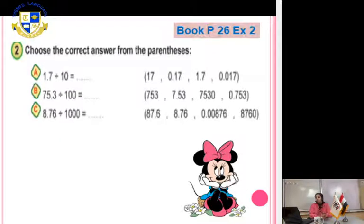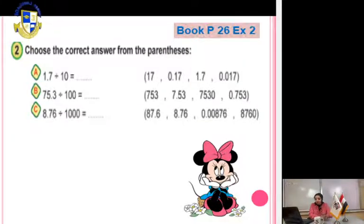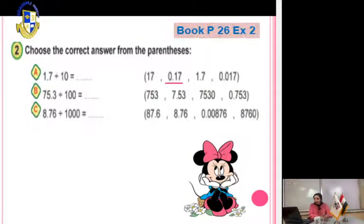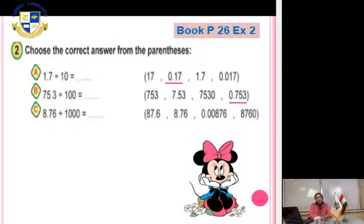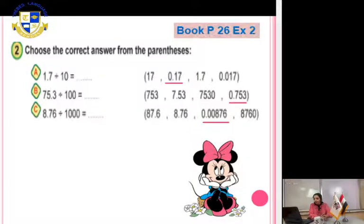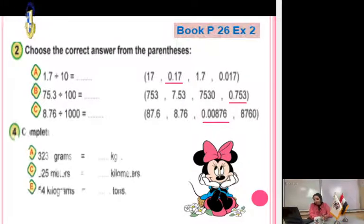Choose the correct answer: (a) 1.7 divided by 10 — move decimal point one digit to the left, answer is 0.17. (b) 75.3 divided by 100 — move two digits, answer is 0.753. (c) 8.76 divided by 1000 — move three digits to the left, answer is 0.00876.